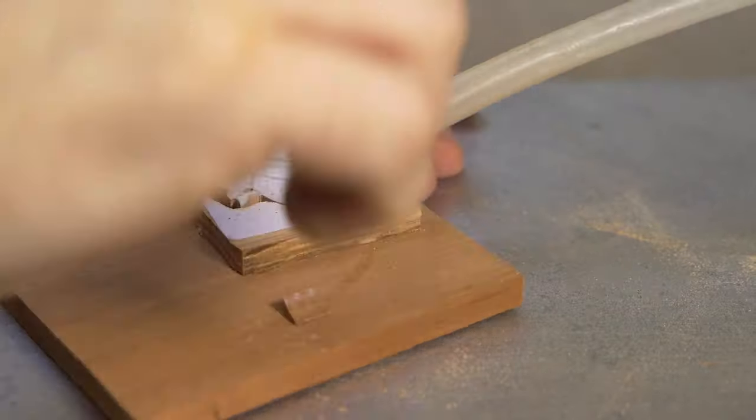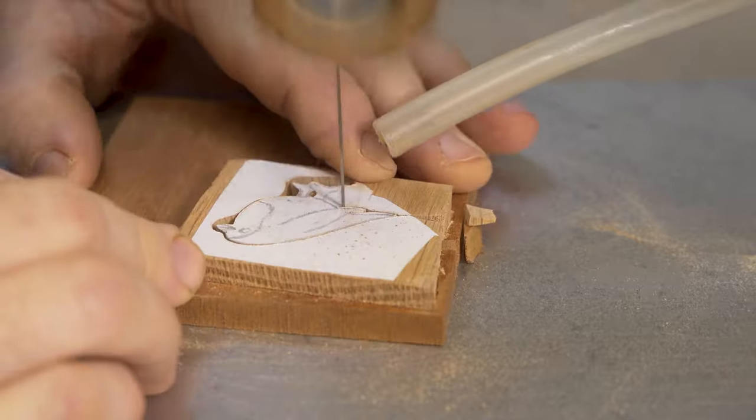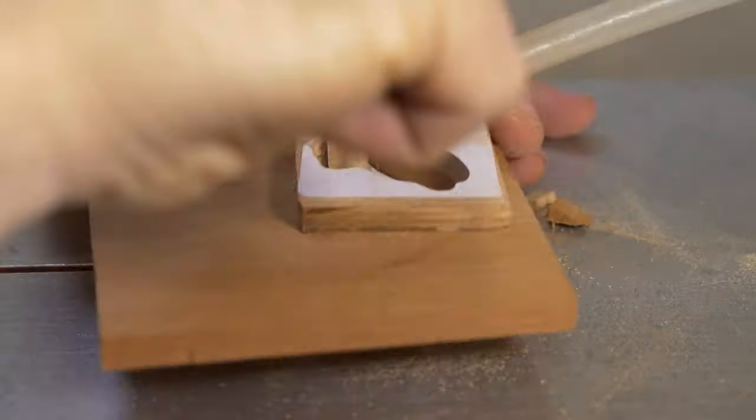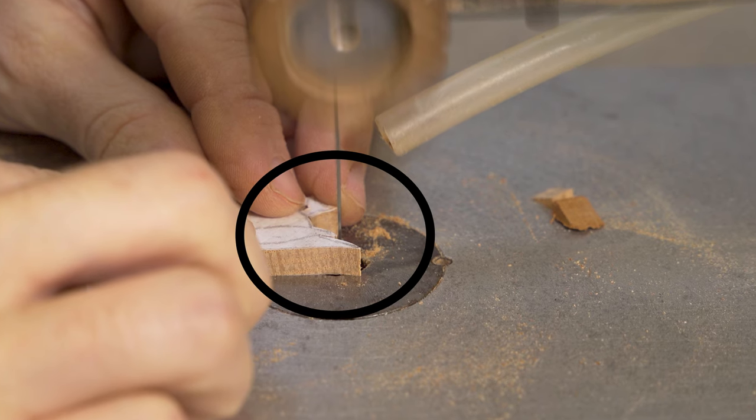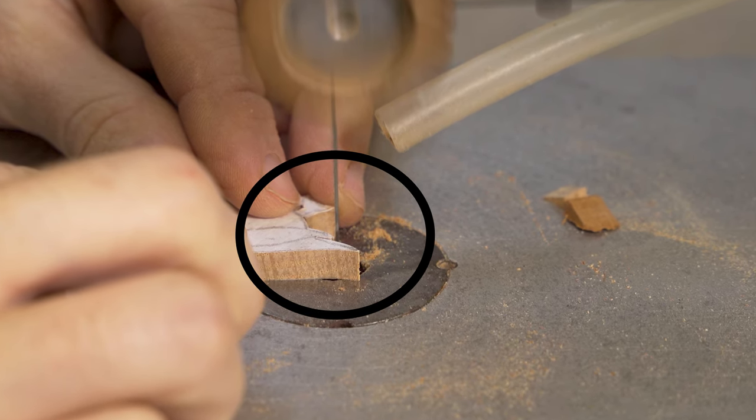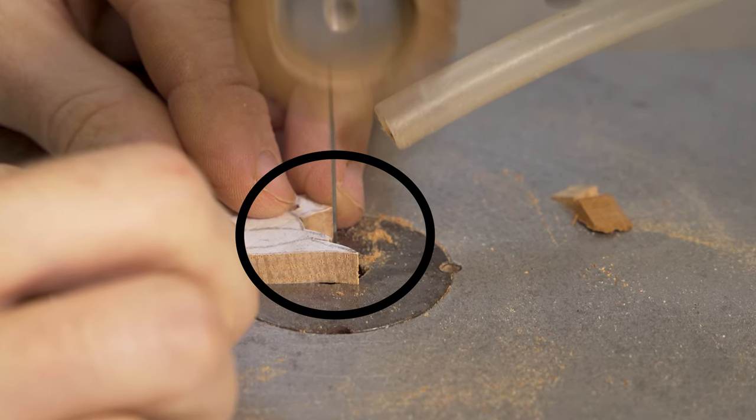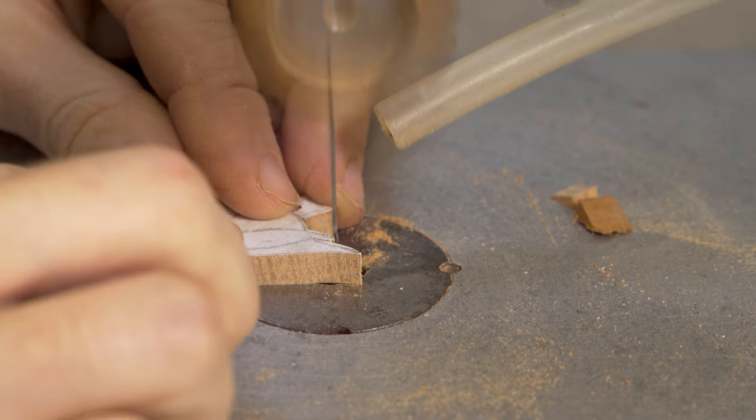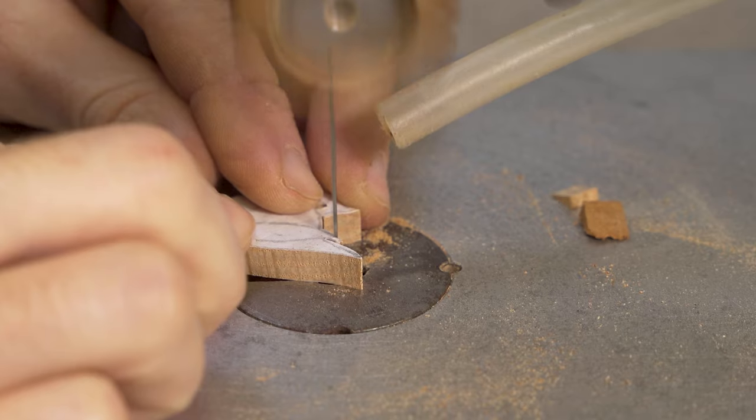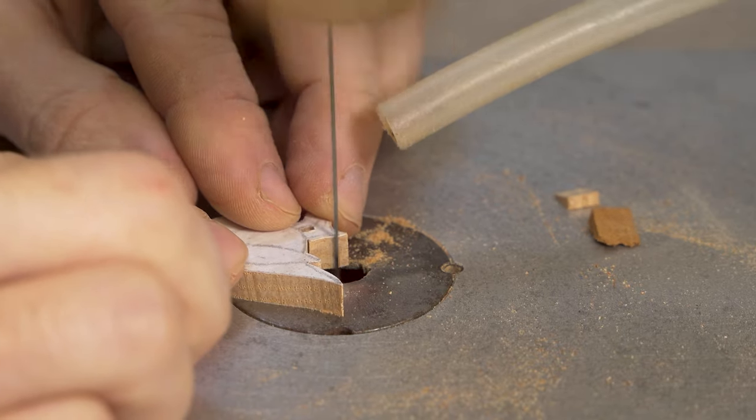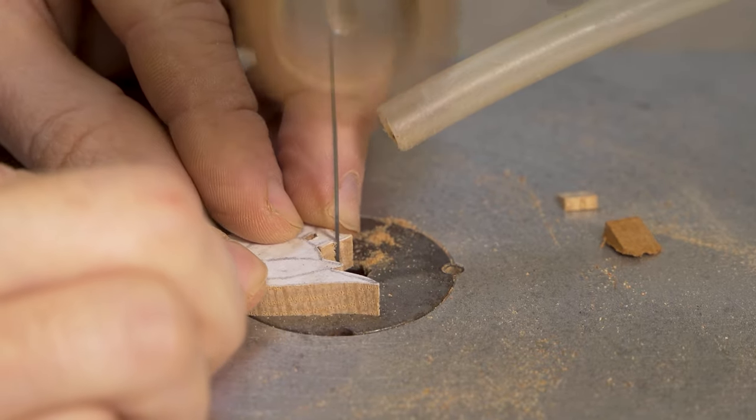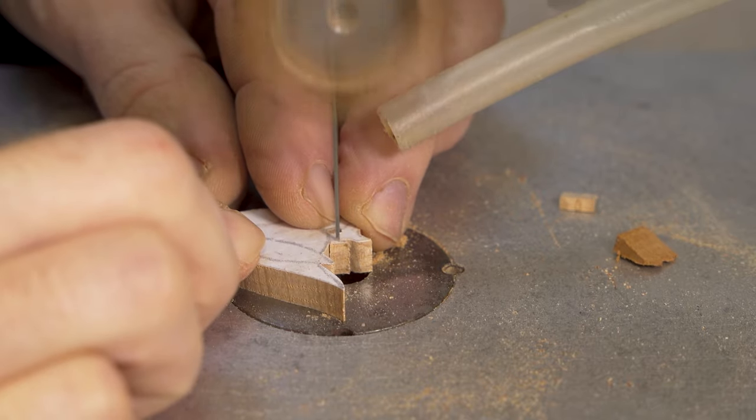Once we have cut that outline out, you can see we have a little bit of finishing work to do, but we are highlighting how close our hands are now to the blade. While the scroll saw is a relatively safe piece of equipment to work with, it is preferable—especially if you are a beginner—for your confidence to have your hands a little bit further away from the cutting edge.